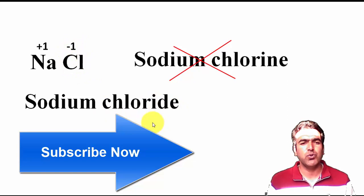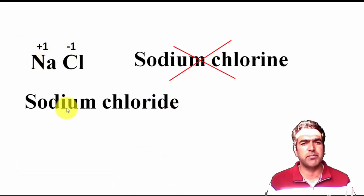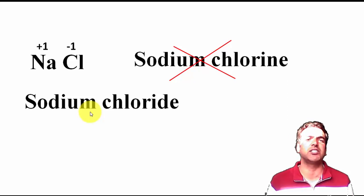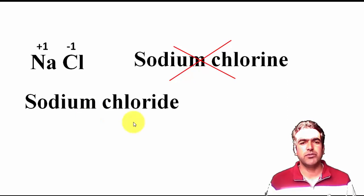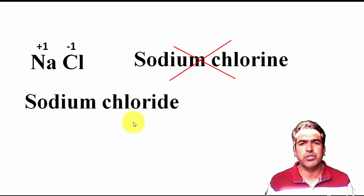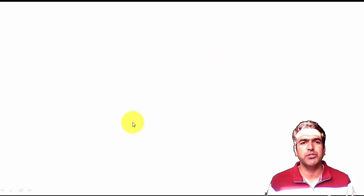So how do we name a given cation and a given anion in a compound? We are going to learn this today. There are some rules we need to know. Rule number one: